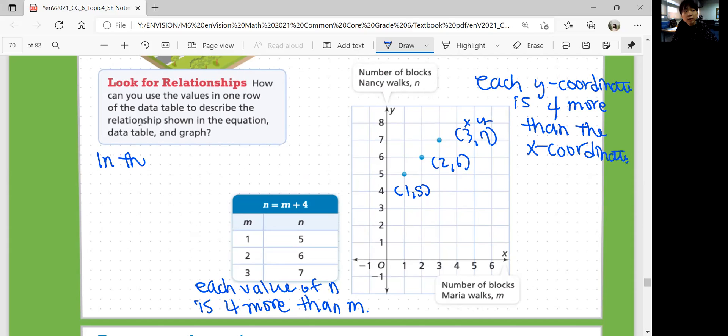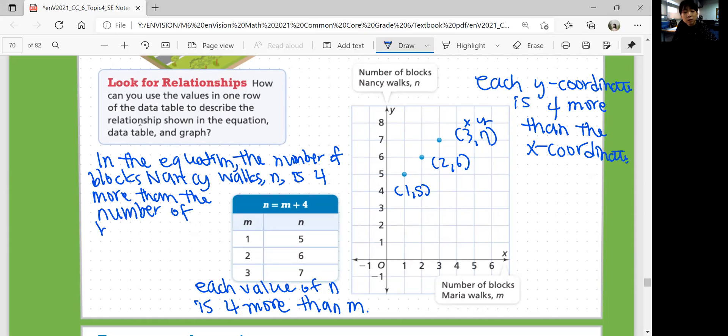In the equation, the number of blocks Nancy walks, n, is four more than the number of blocks Maria walks, which is represented by m. That is how you can read the equation in this situation.